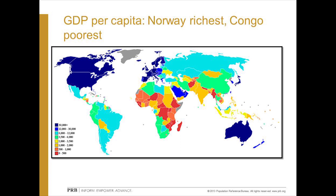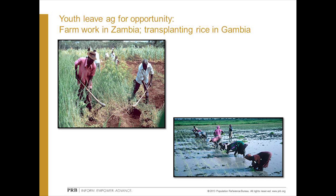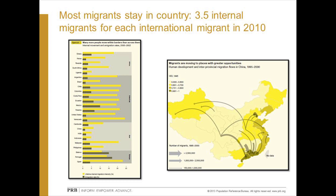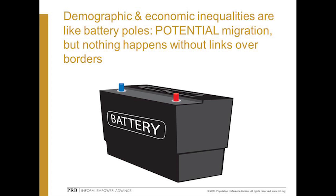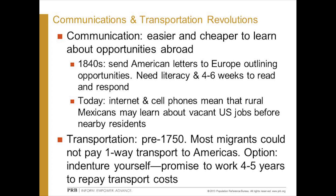Low farm incomes encourage especially young people to leave agriculture. Richer countries are generally in the north, and incomes in agriculture are typically lower than urban incomes in the south. Remember, there are almost four internal migrants for each international migrant. But we still need to link people in poorer areas to places in richer areas for international migration to occur. The three revolutions making this bridge over borders possible are communications, transportation, and rights.